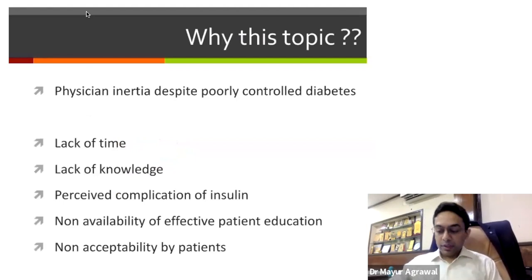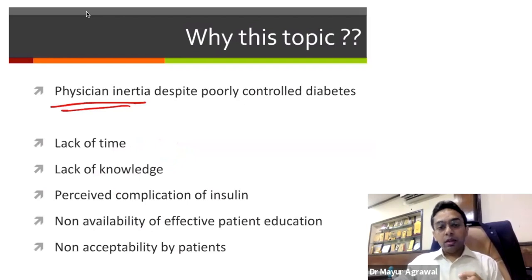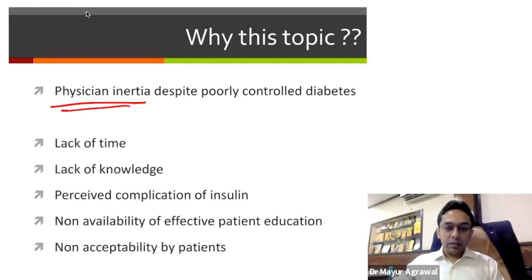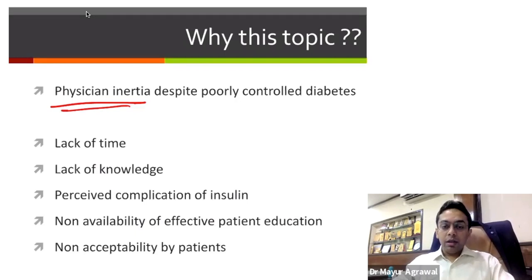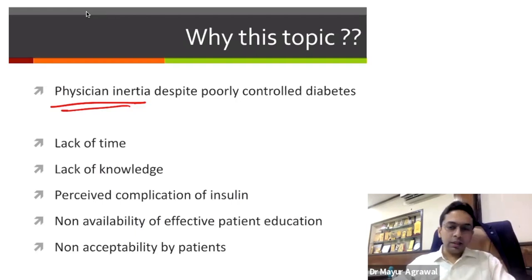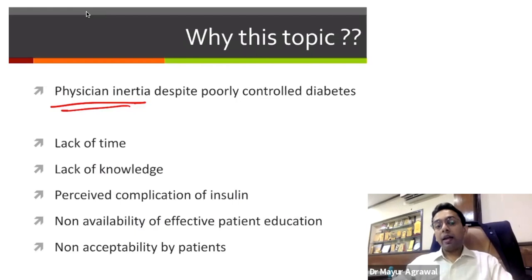Why are we discussing this topic? Because there is physician inertia. Despite poor glycemic control, the physician is reluctant to start insulin. The patient is also reluctant — he will always say, just see this time, next time I will control my sugar. He'll give an excuse: there was a party, a family function, because of cold I could not walk. The physician also says, okay, let's see next time. The patient also says, let's see next time. Next time never comes, and glycemia remains poor. There is great inertia at both the physician and patient level.